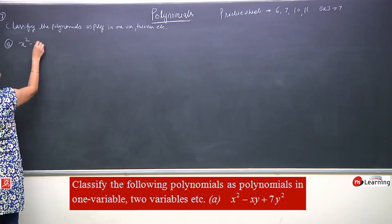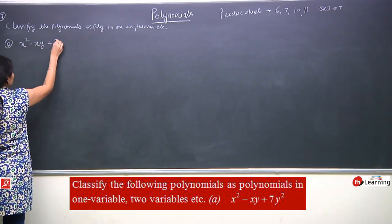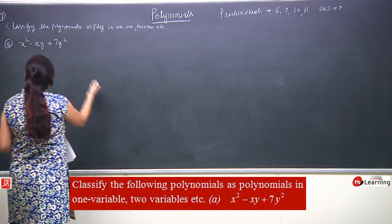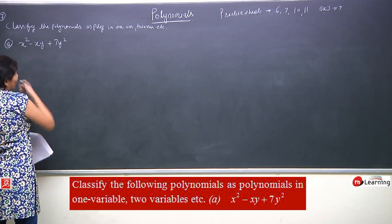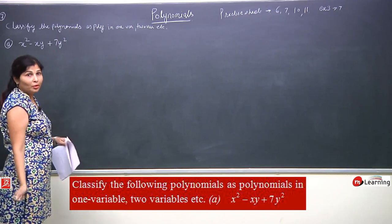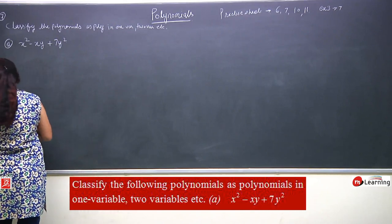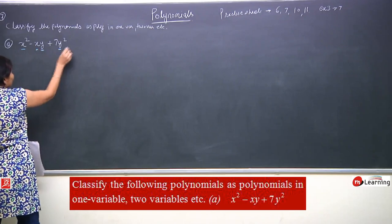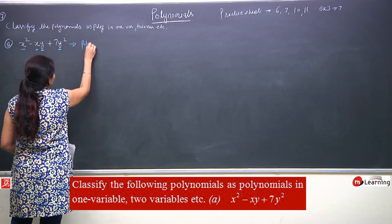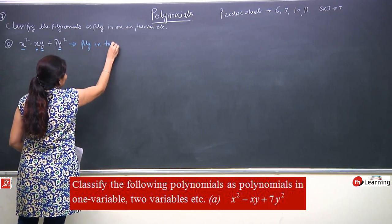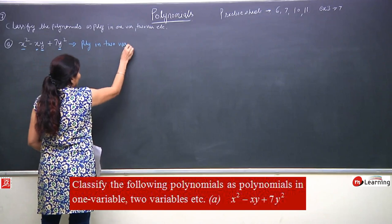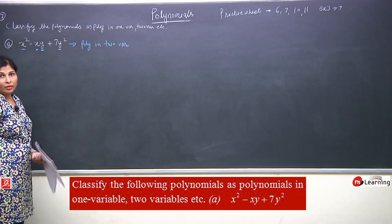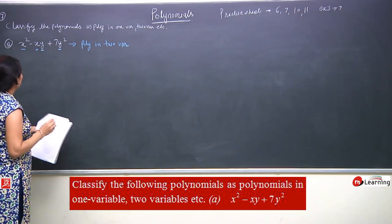The first polynomial is x² minus xy plus 7y². Here we can clearly see there are two variables: x and y. So this is a polynomial in 2 variables. It is a polynomial because all powers are positive integers.